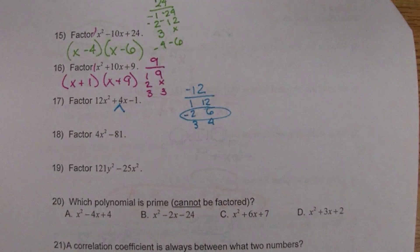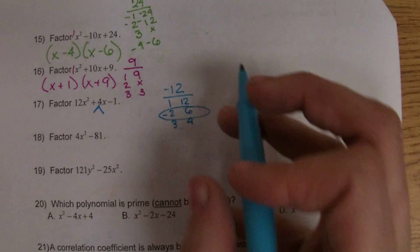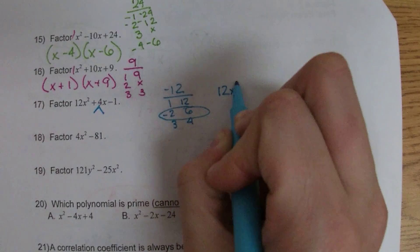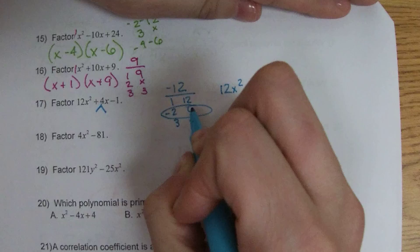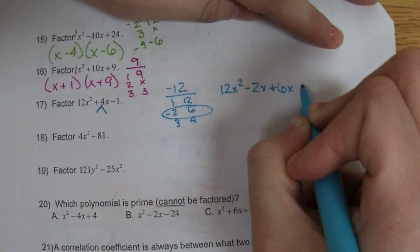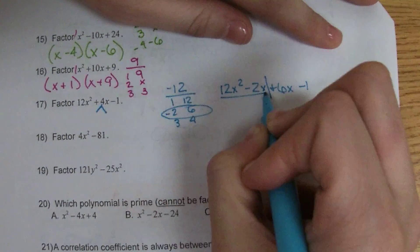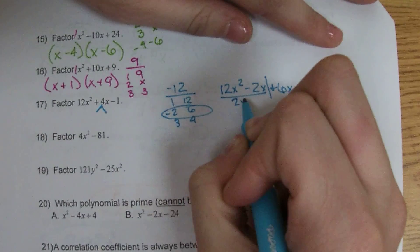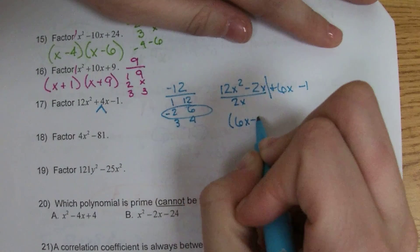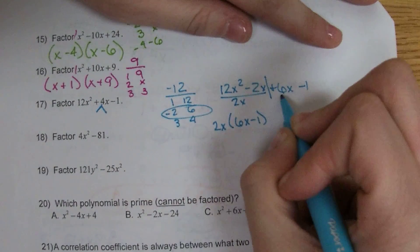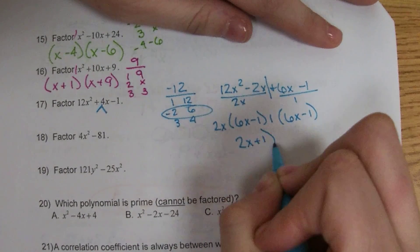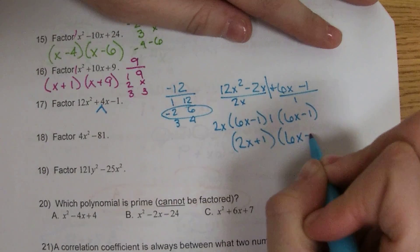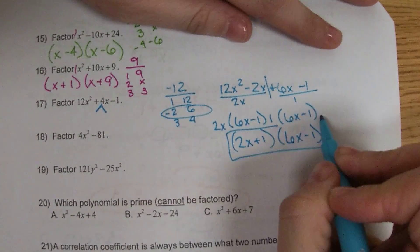Now we need to rewrite this and factor by grouping. So this is going to turn into 12x squared minus 2x plus 6x minus 1. Over here we have a GCF of 2x. Over here we have a GCF of 1. So we'll have 2x plus 1 and 6x minus 1. And that will be our answer.